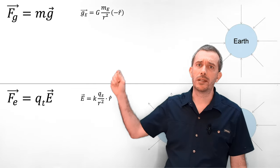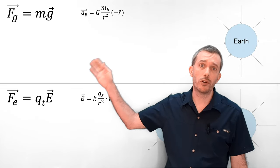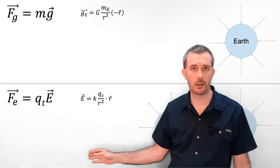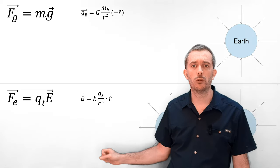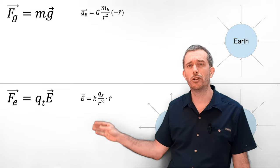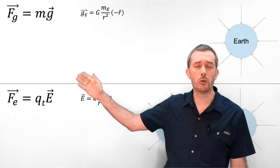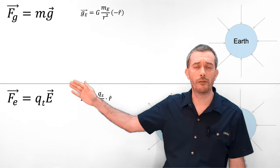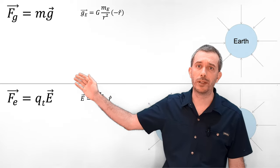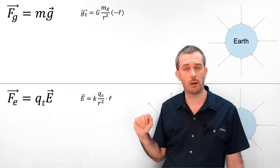I have already used the similarity between the universal law of gravity and Coulomb's law to introduce the electric field as a neat shortcut to calculate the electric force, similar to when we use the gravitational field g to calculate the force of gravity as mg instead of using the universal law of gravity.